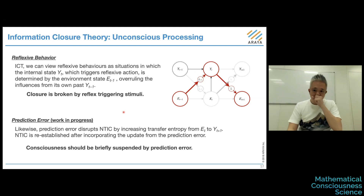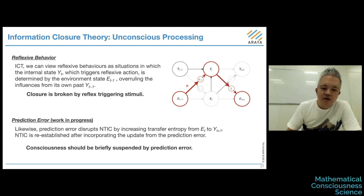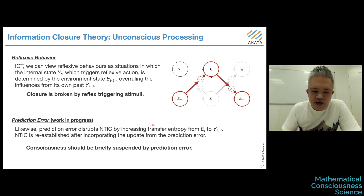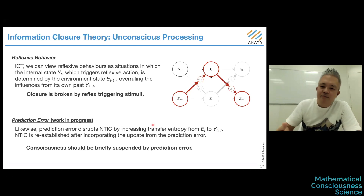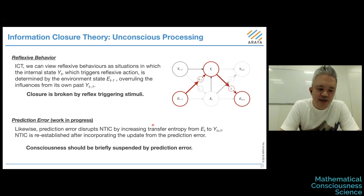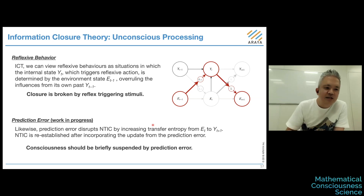We can make a similar argument for prediction error. This part is work in progress, but once we have an NTIC process generating consciousness, if there's a prediction error, that should generate transfer entropy — the second term in NTIC — and then the NTIC value should briefly decrease. Then consciousness must be briefly suspended. I think this is an interesting prediction made by Information Closure Theory.